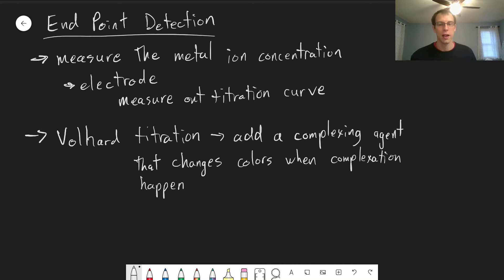So the physical change we're looking for is a color change. And that color change occurs because the complex is colored when formed and not colored when it is not formed, or it has a different color at least. So imagine one specific example is, say we're measuring chloride with silver.